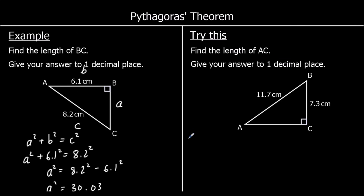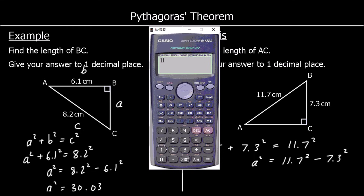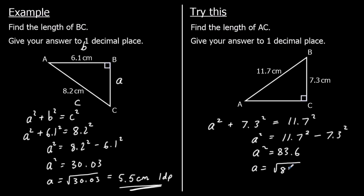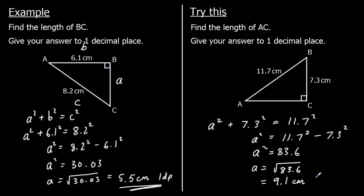One for you to try. We're finding a shorter side. So a squared plus 7.3 squared equals 11.7 squared, which means a squared is 11.7 squared minus 7.3 squared. Typing that into the calculator: 11.7 squared minus 7.3 squared equals 83.6. So a squared is 83.6. Square rooting both sides, to one decimal place we get 9.1. So a is 9.1 centimeters to one decimal place.